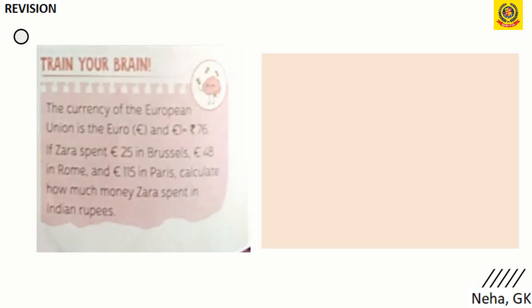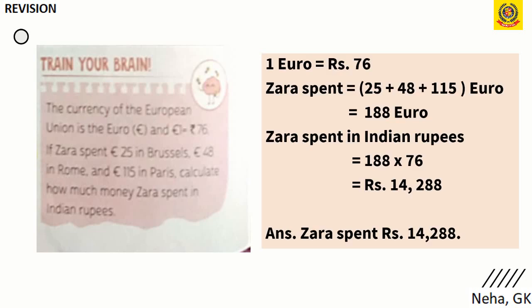Train Your Brain: The currency of the European Union is the Euro, and 1 Euro equals 76 rupees. Zara spent 25 Euro in Brazil, 48 Euro in Rome, and 115 Euro in Paris — a total of 188 Euro. In Indian rupees, 188 × 76 = ₹14,288. So Zara spent ₹14,288.